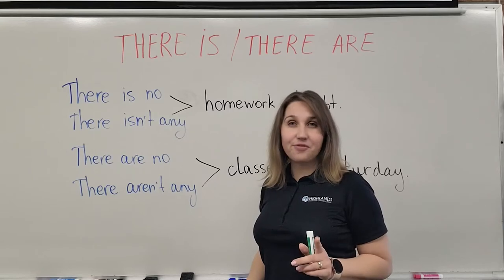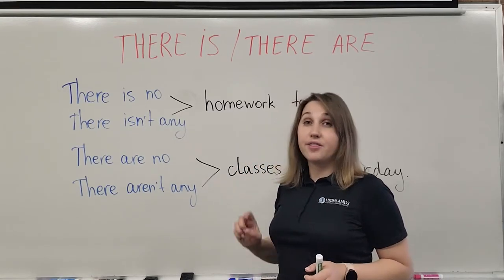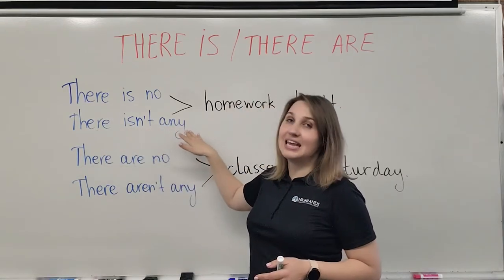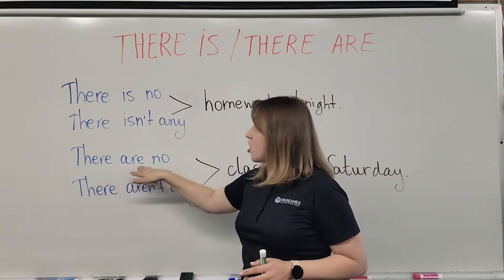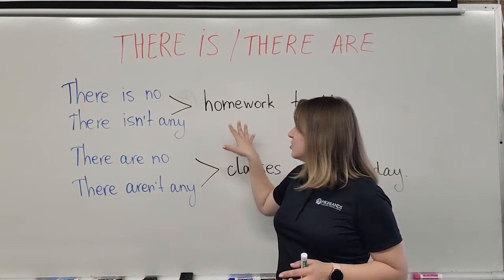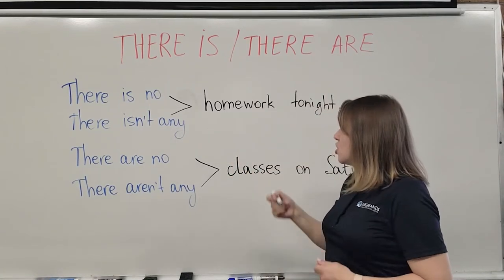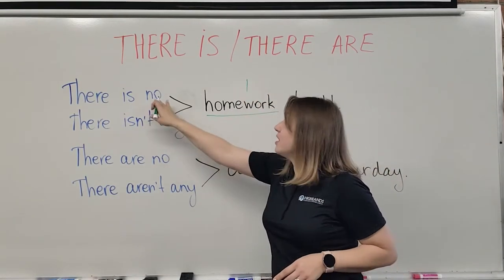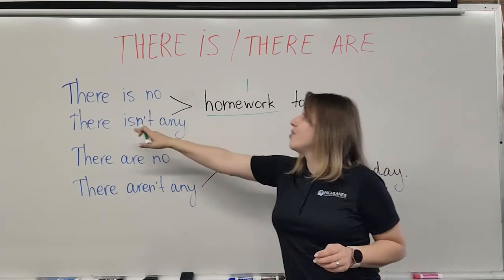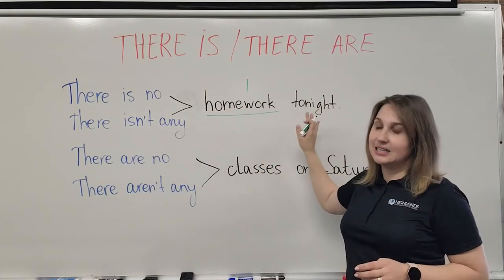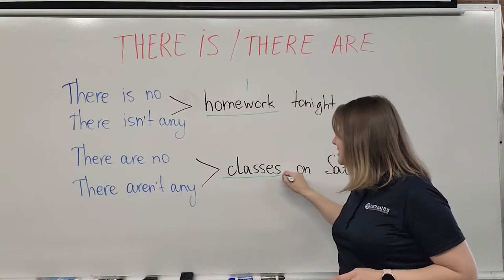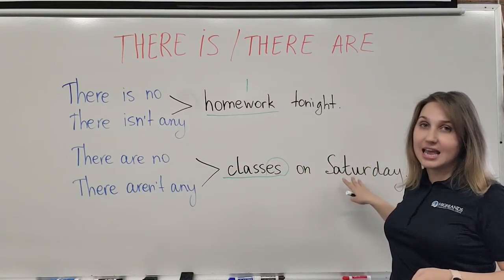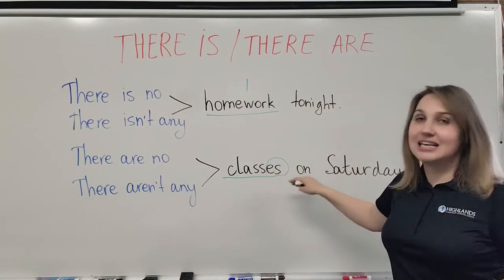When it comes to the negative form, there are two ways to express it. The first way is 'there is no' and the second way is 'there isn't any.' The same applies for the plural form: 'there are no' or 'there aren't any.' For the singular, using 'homework' — a non-count noun — you can say 'There is no homework tonight' or 'There isn't any homework tonight.' For the plural, using 'classes,' you can say 'There are no classes on Saturday' or 'There aren't any classes on Saturday'.